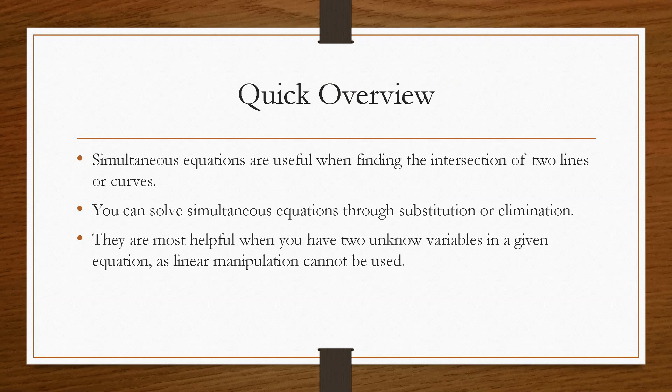Simultaneous equations allow you to find two unknown variables when you are given at least two equations. Because if we have one equation and two unknowns, it's impossible to solve. So we can't do regular linear manipulation, like changing the subject of the formula. We have to use a different method, and in this case, it is simultaneous equations.